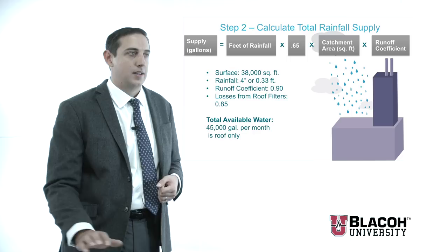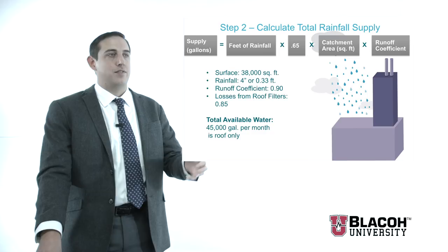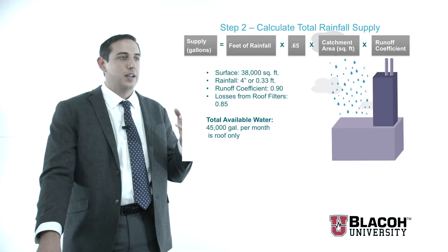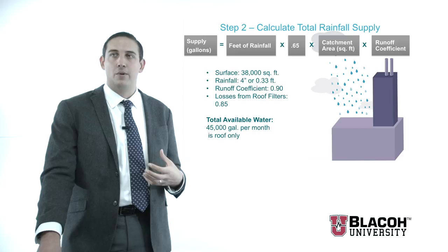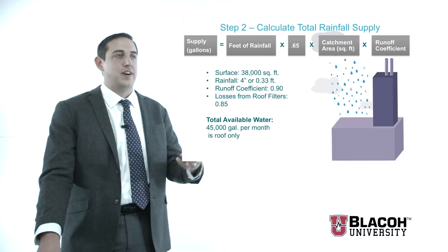Bringing back the equation discussed earlier: feet of rainfall times the loss factor times the catchment area times the runoff coefficient. I have approximately 38,000 square feet of catchment area, four inches of rainfall or approximately 0.33 feet, a runoff coefficient of 0.9 — being somewhat conservative in sizing — and a loss factor of 0.65. Calculating that through, my total available water is approximately 45,000 gallons per month, which is about an average size collection for a small commercial building like this.